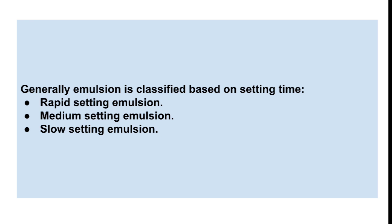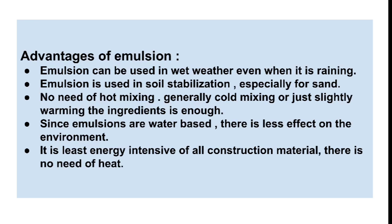Emulsion is also classified based on setting time — the rate at which it becomes set. There are rapid setting, medium setting, and slow setting emulsions. Rapid setting emulsion is used for surface dressing and penetration macadam. Medium setting emulsion is used to pre-mix with coarse aggregate.